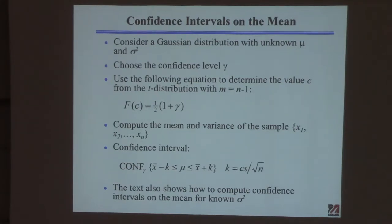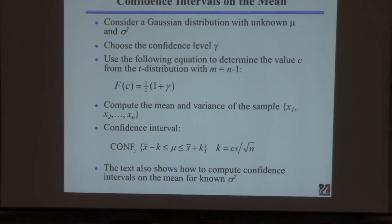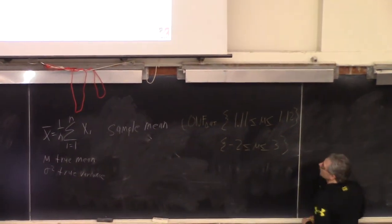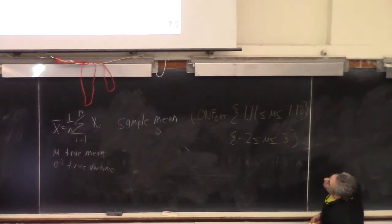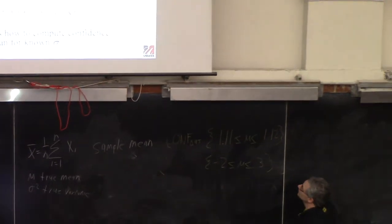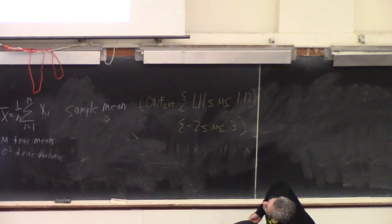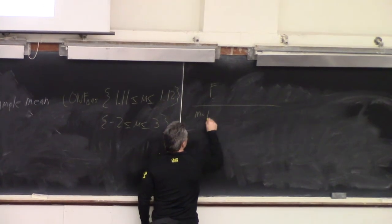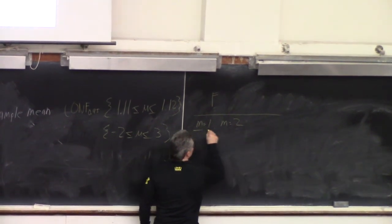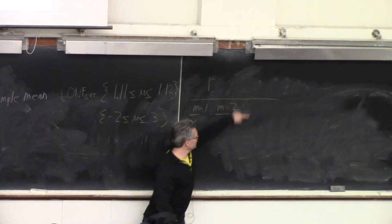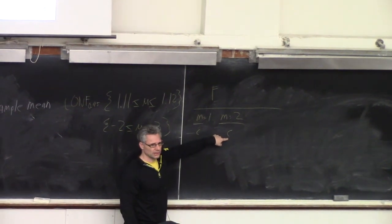The idea is you have to look in the table. The table gives you a value of f and different degrees of freedom — m equal 1, m equal 2 — and it has all these c values. You have to look up what the value of f is and the number of degrees of freedom and find the value associated with those.